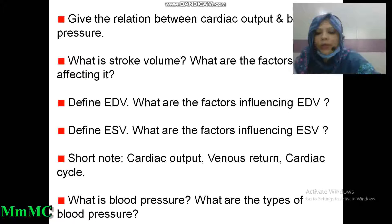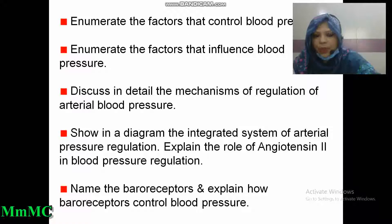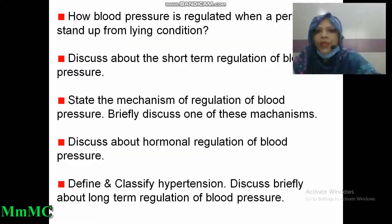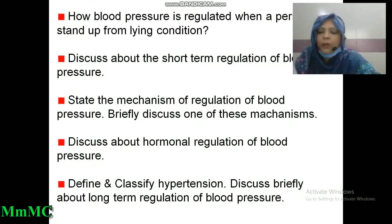What is blood pressure? What are the types of blood pressure? Enumerate the factors that control and influence blood pressure. Discuss in detail the mechanisms of regulation of arterial blood pressure. Show in a diagram the integrated system of arterial blood pressure regulation. Explain the role of angiotensin-2 in blood pressure regulation. Name the baroreceptors and explain how they control blood pressure. How is blood pressure regulated when a person stands up from a lying position? Discuss short-term regulation and long-term regulation of blood pressure. Define and classify hypertension.